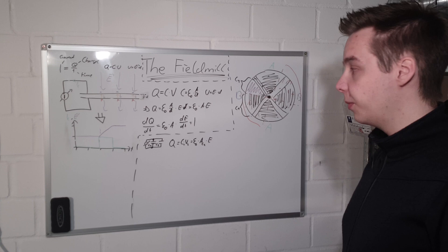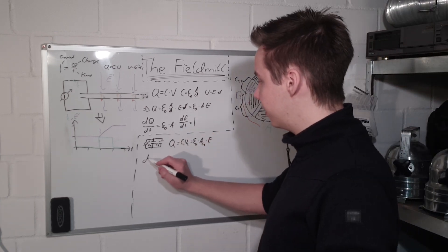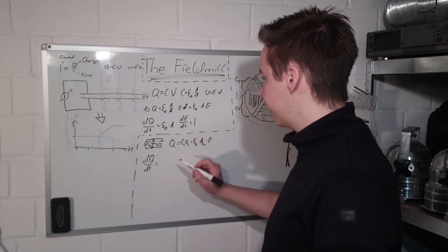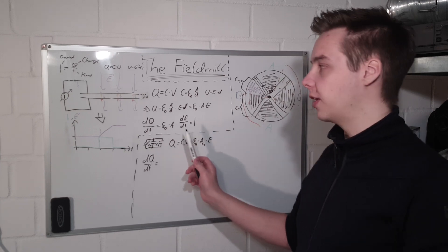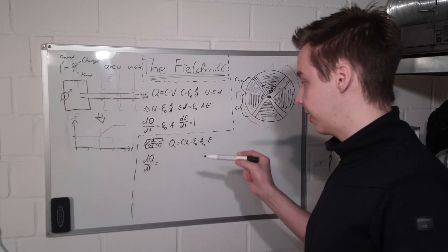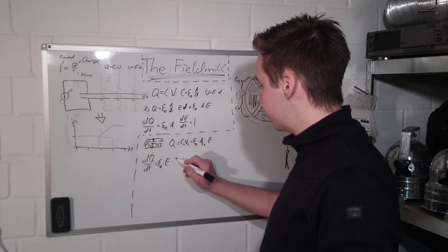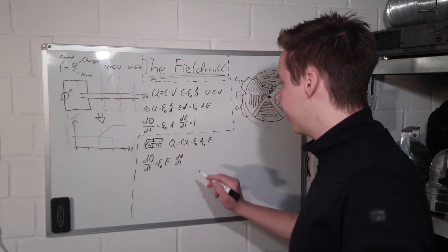Then to calculate the current, we do the same we did up here, where we differentiated the charges. So we do dQ over dt. And unlike up here, where the field was changing, the area is changing now. So we get epsilon zero times E times the change in area over the change in time.